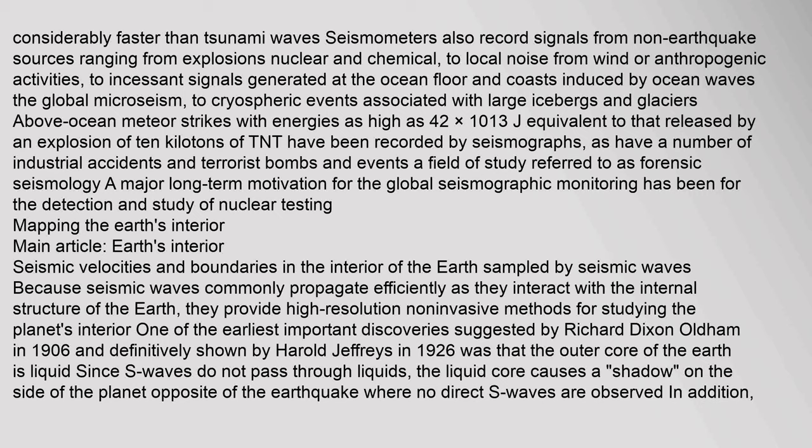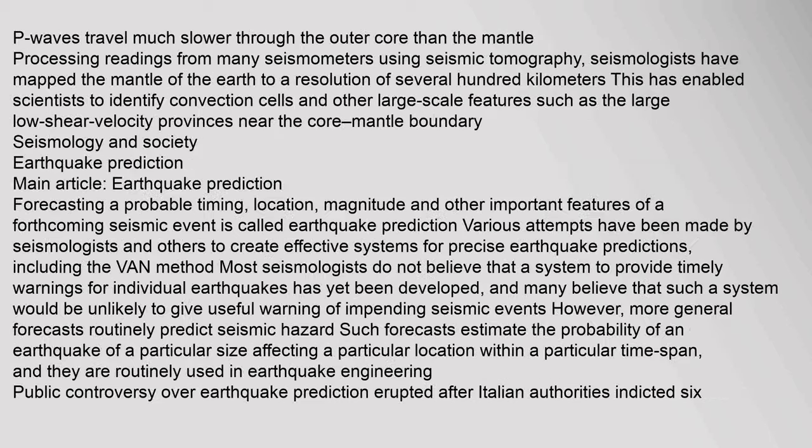Because seismic waves commonly propagate efficiently as they interact with the internal structure of the Earth, they provide high-resolution, non-invasive methods for studying the planet's interior. One of the earliest important discoveries — suggested by Richard Dixon Oldham in 1906 and definitively shown by Harold Jeffries in 1926 — was that the outer core of the Earth is liquid. Since S waves do not pass through liquids, the liquid core causes a shadow on the opposite side of the planet from the earthquake where no direct S waves are observed. P waves also travel much slower through the outer core than the mantle. Using seismic tomography, seismologists have mapped the mantle to a resolution of several hundred kilometers, enabling identification of convection cells and large low shear velocity provinces near the core-mantle boundary.